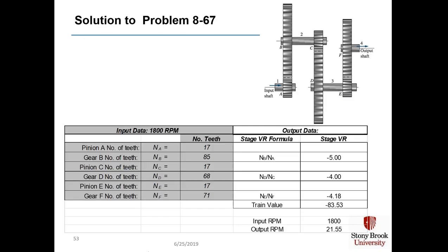Here's an Excel spreadsheet showing the solution to problem 8-67. We give you the number of teeth in each gear and pinion, the stage velocity ratio formula, and the calculated train value. With three direction changes, the output rotates in the opposite direction from the input.